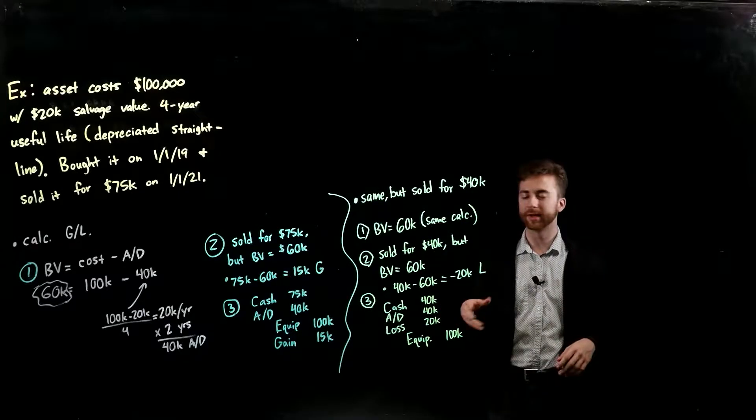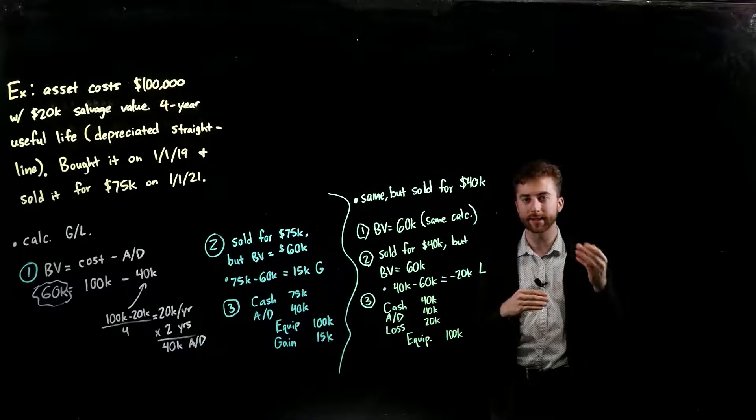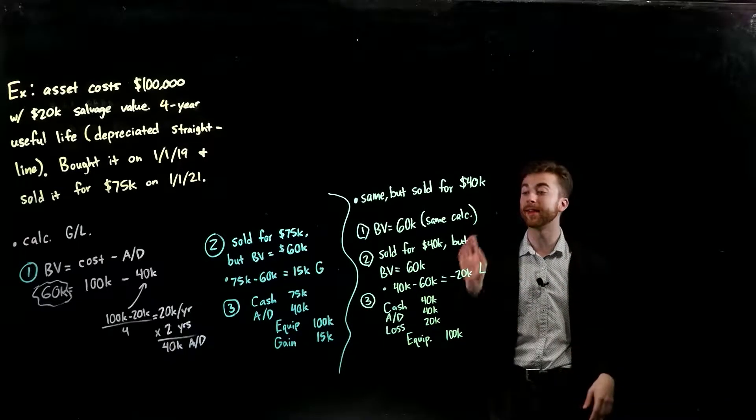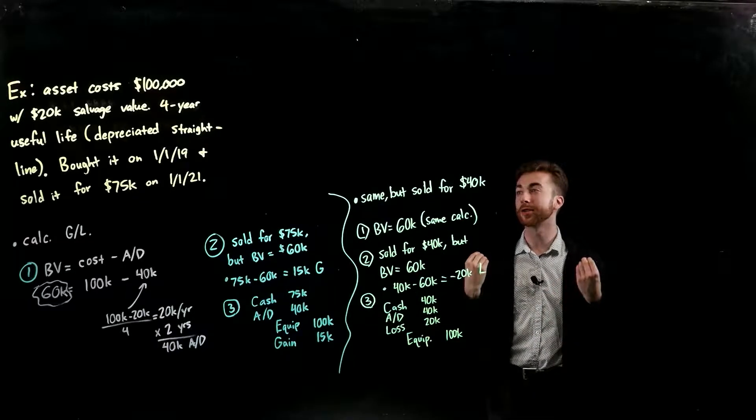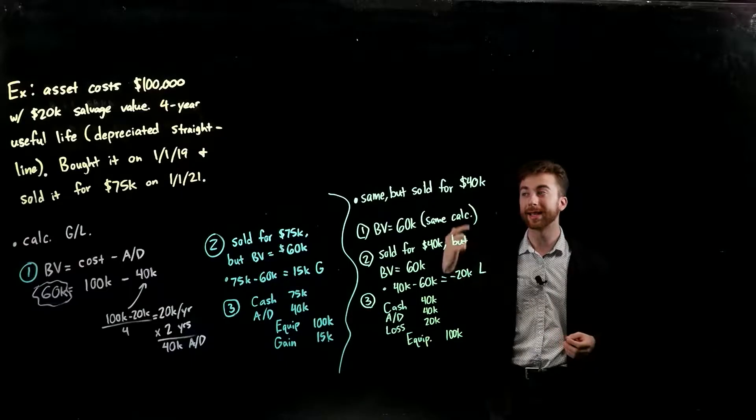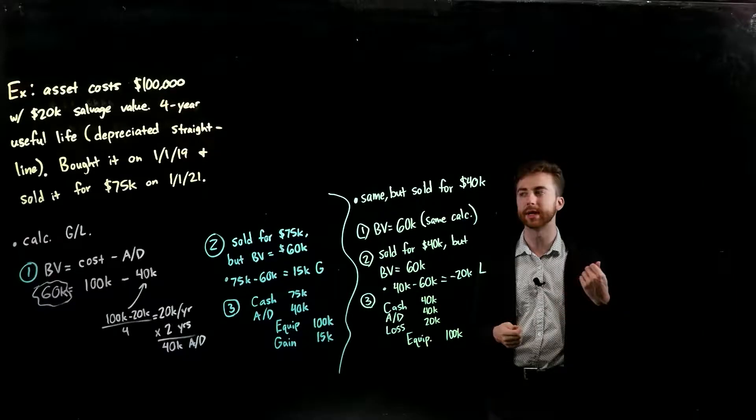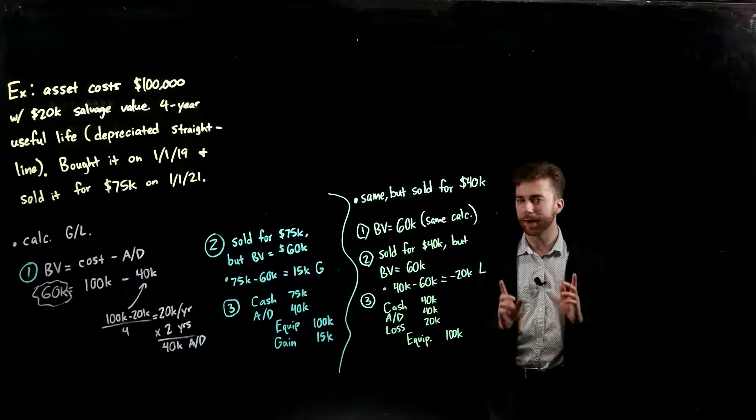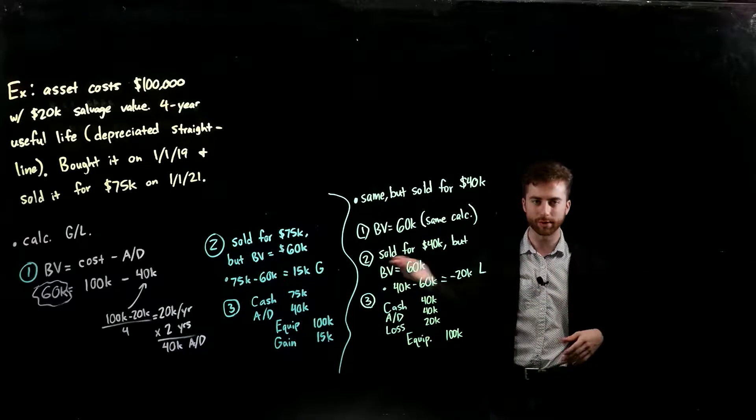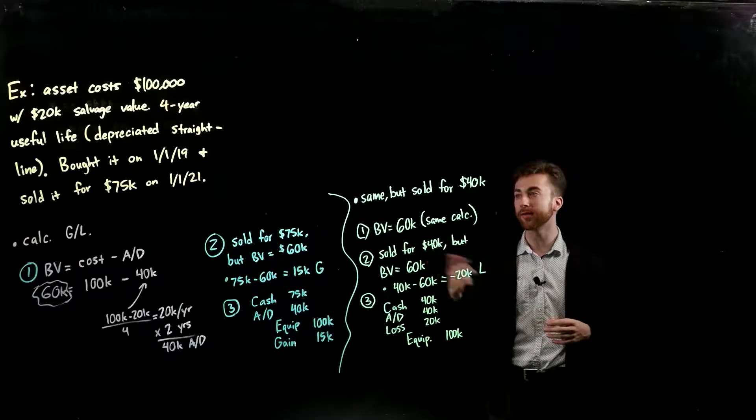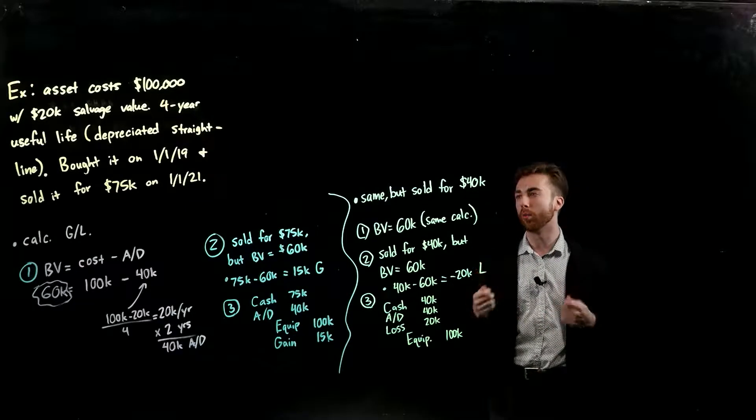Now we're going to go through this example to demonstrate exactly what we talked about, where we're going to calculate our book value, compare it to the selling price and decide whether or not it's a gain or loss, and then I'm going to show you the journal entries that go along with that. What we have here is an asset that costs $100,000 and has a $20,000 salvage value. We think it has a four year useful life and we're going to depreciate it straight line depreciation. If you're not sure what that is, I'll put the link in the description for the depreciation video we have. You'll have to know how to do that in order to solve these.